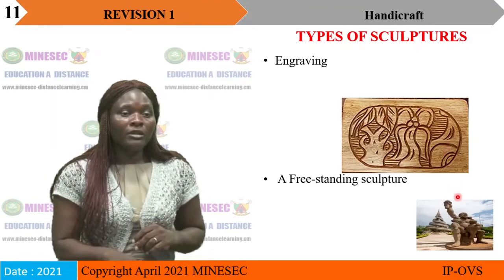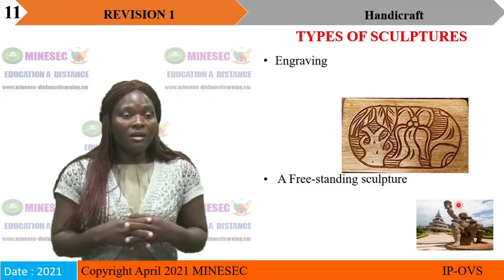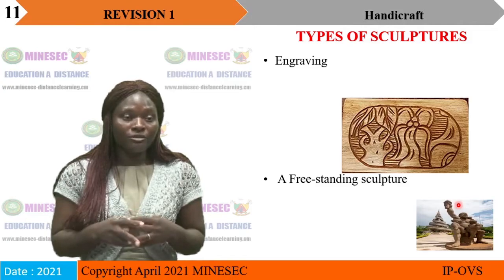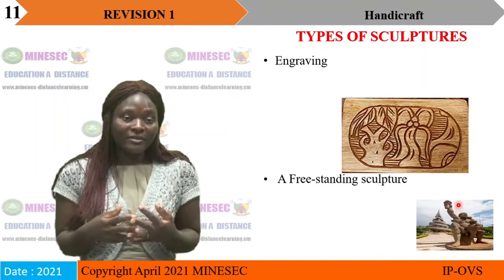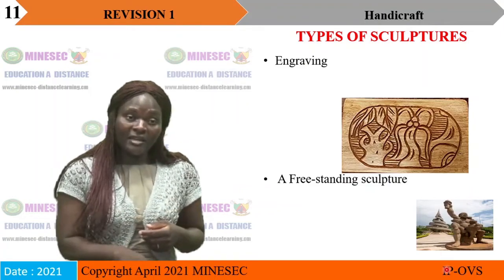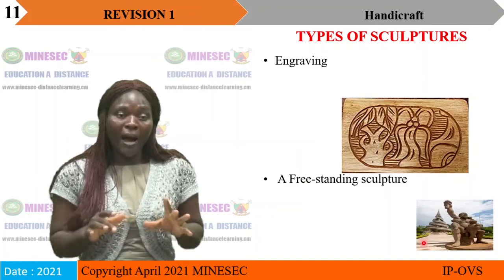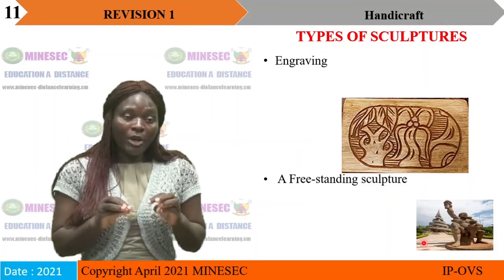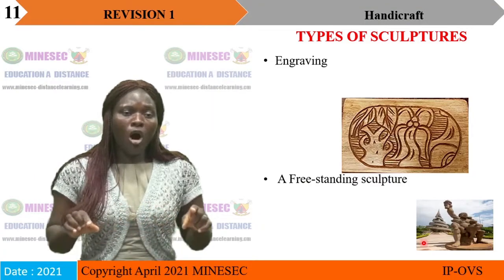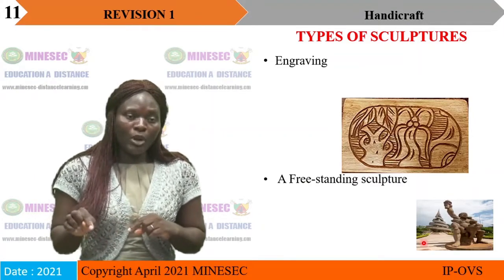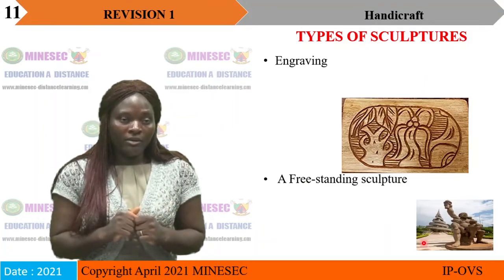The last type is a free-standing sculpture, also called a stand-alone. It has no background and you can see it from all directions — you can go around it and clearly see it from every angle.